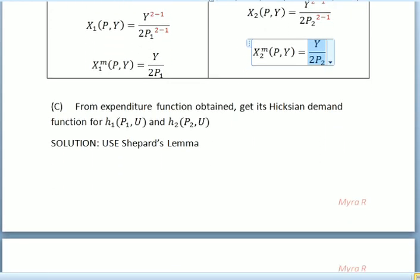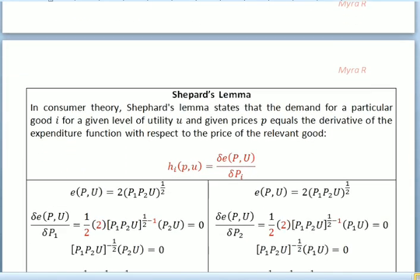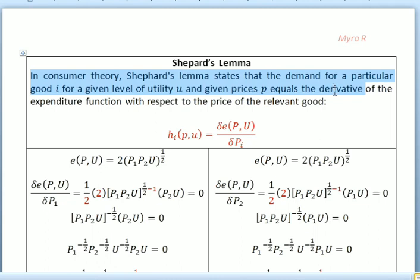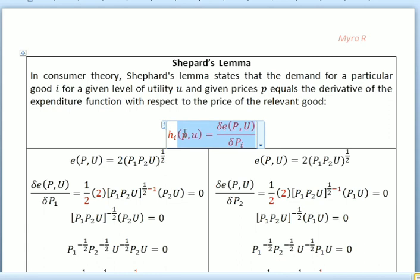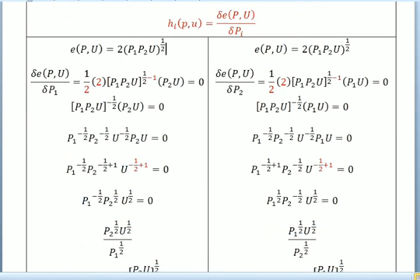For the next question we are going to find the Hicksian demand function. For this question we are going to use Shephard's Lemma, where in consumer theory Shephard's Lemma states that the demand for a particular good i, for a given level of utility and given prices, equals the derivative of the expenditure function with respect to the price of the relevant good: h equals ∂e(p,u)/∂p. We rewrite the expenditure function as 2(p1·p2·u)^(1/2).